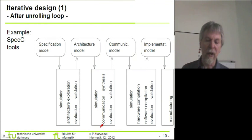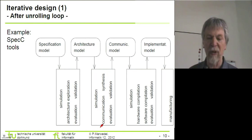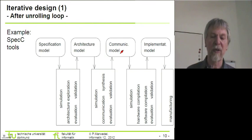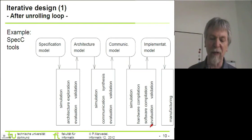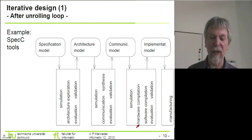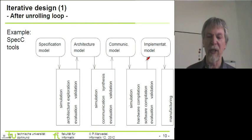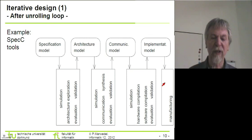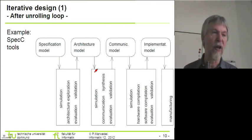As a result of simulating the hardware model, we again obtain an evaluation and a validation, and after that we can start the next set of design steps which involve the communication synthesis — that means we decide how to communicate between the components. As a result we obtain a communication model which can be simulated again, giving us an evaluation and a validation of that partial design. We can then perform the next steps involving the detailed generation of hardware and software, and as a result we get a complete implementation model which we can use for manufacturing. These different iterations are special cases of the loop shown in my generic model.